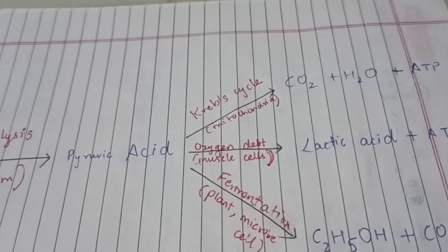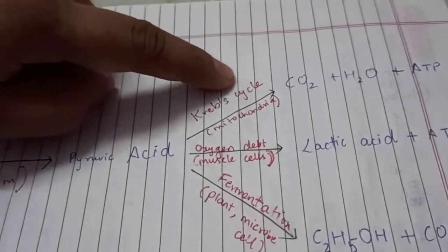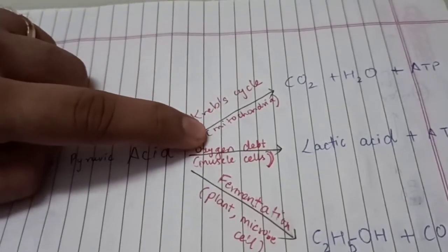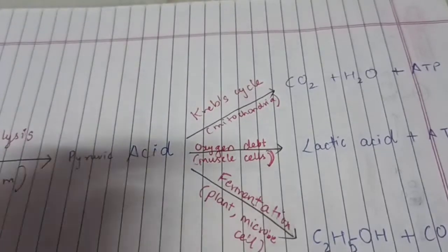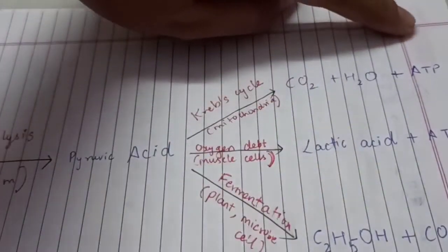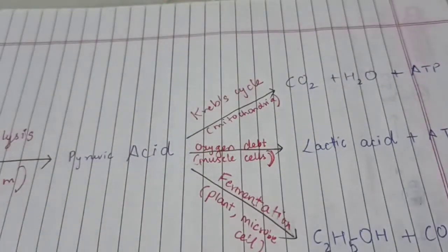Usually, we have aerobic respiration, also called oxybiotic respiration, which results in the Krebs cycle. It happens in the mitochondria and the end products are CO2 and water. And the energy released is stored in the form of ATP molecules, adenosine triphosphate, which is used for our daily activities.